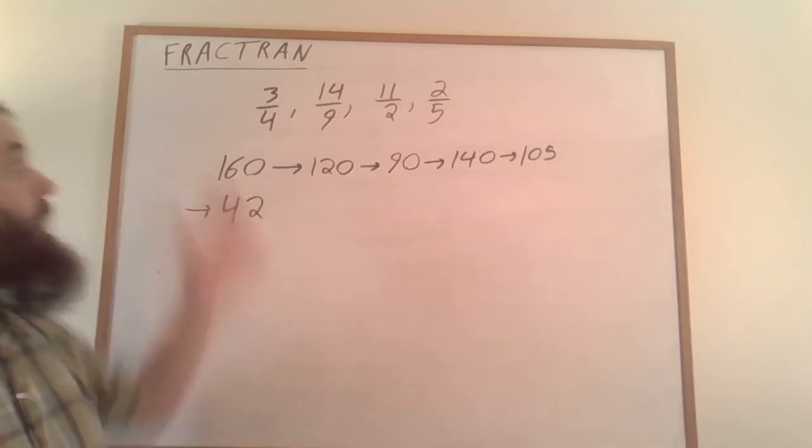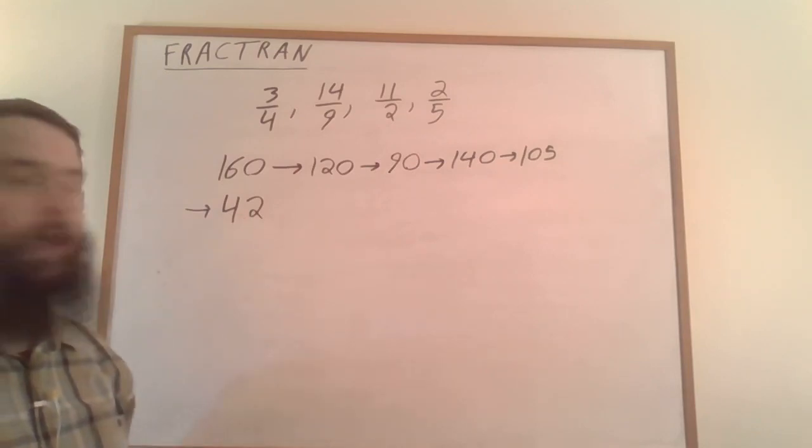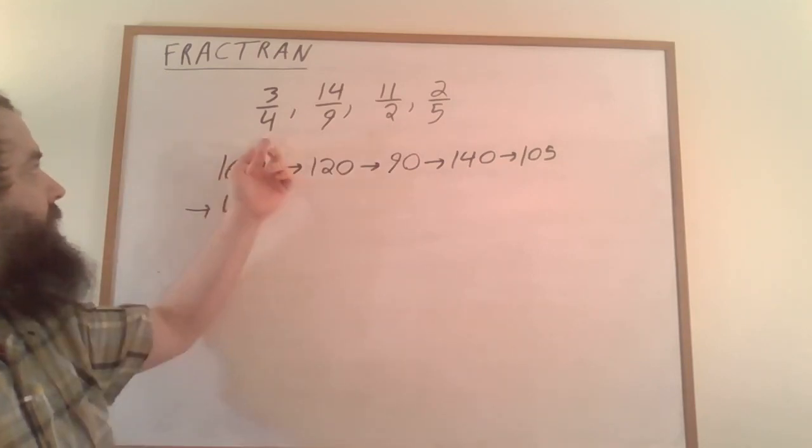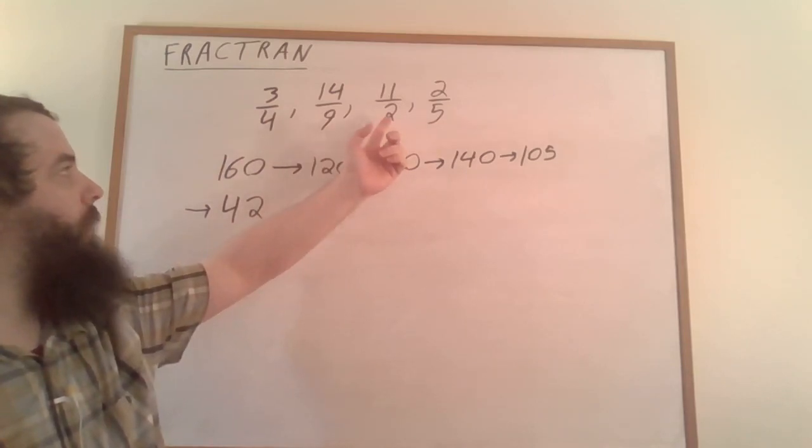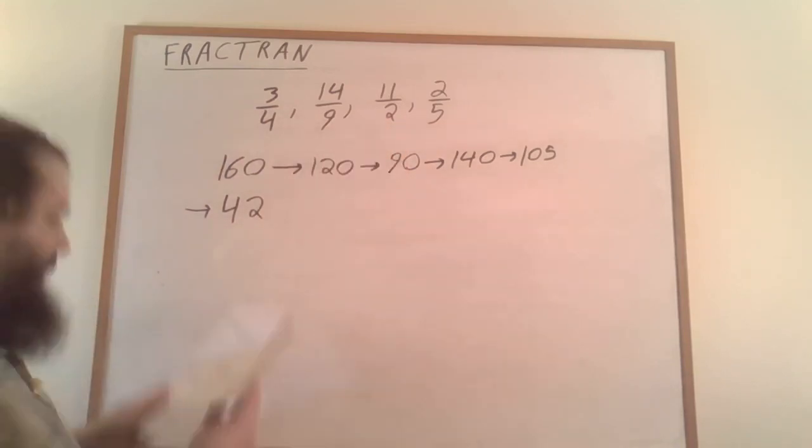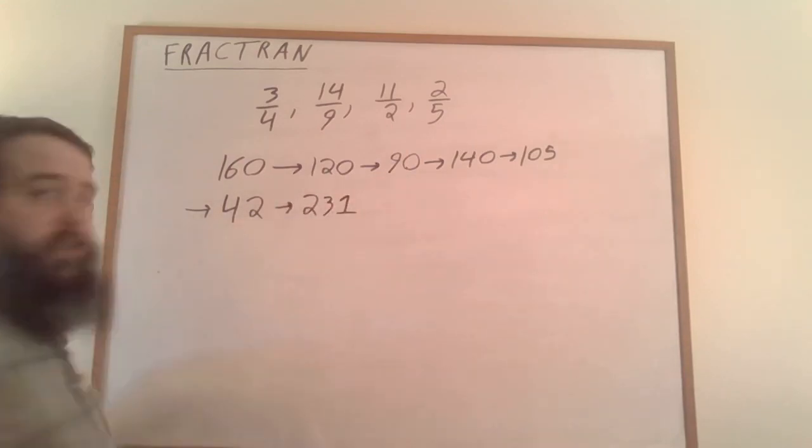Again, we go through our list and look for the first fraction we can multiply 42 by. 42 is not divisible by 4 or 9, but it is divisible by 2, so we multiply by 11/2, giving us 231.